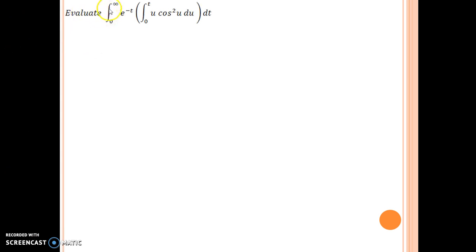It is asking you to evaluate integral 0 to infinity e to the power minus t of integral 0 to t u cos square u du dt.